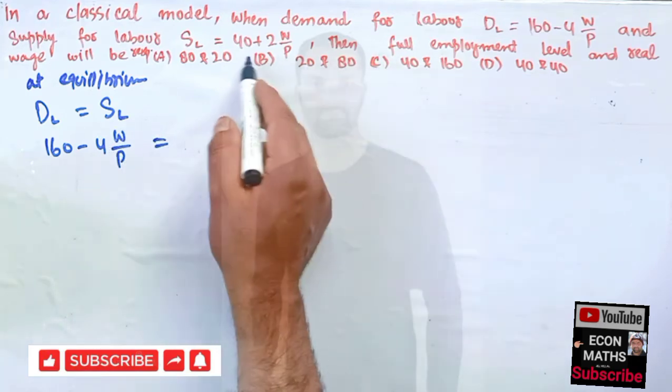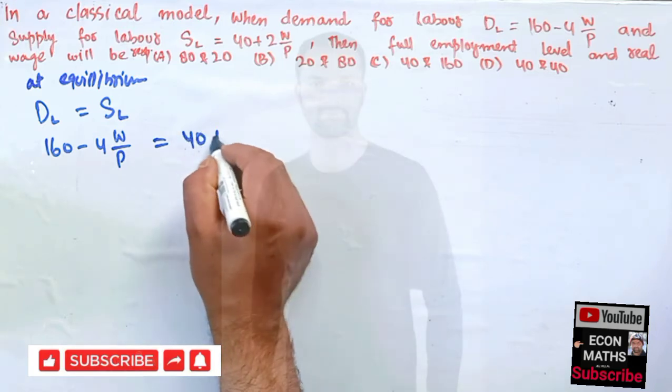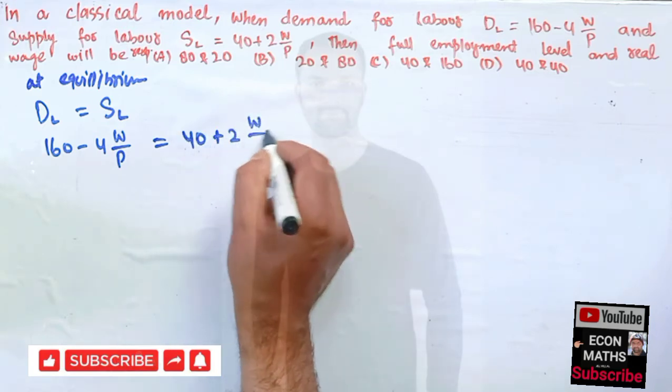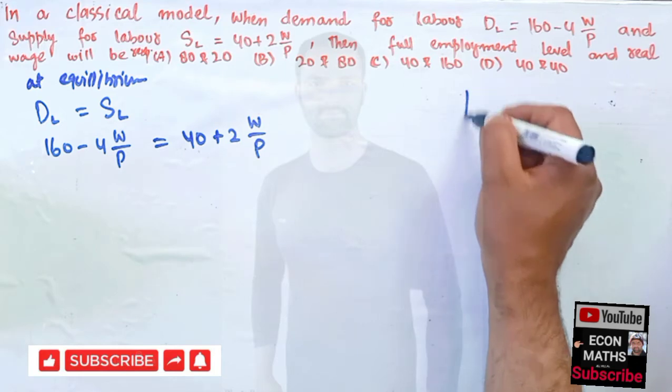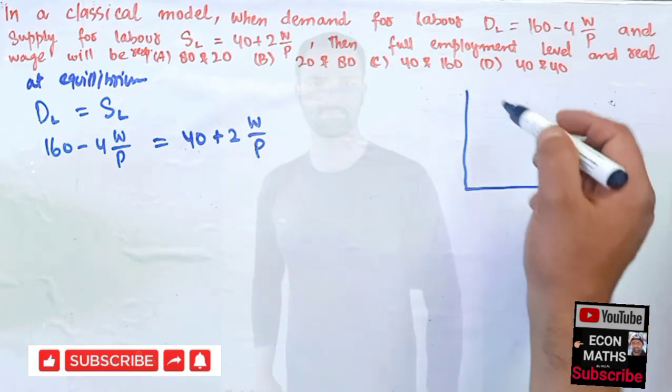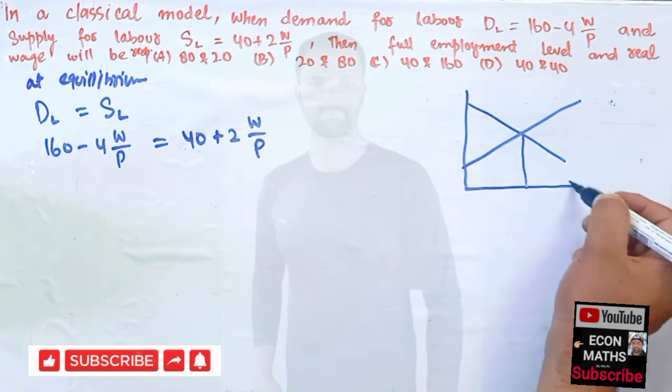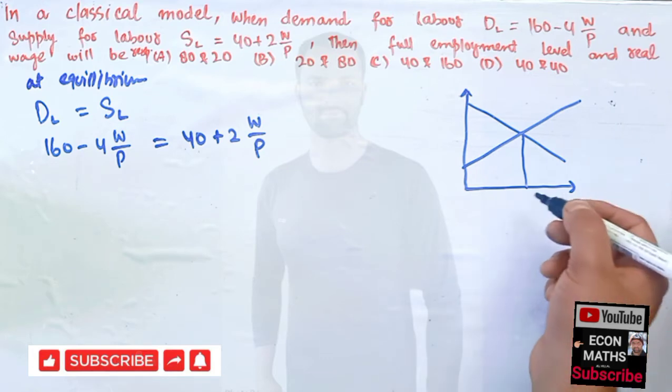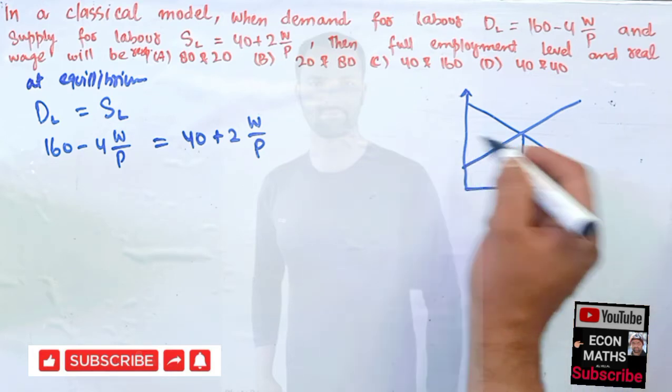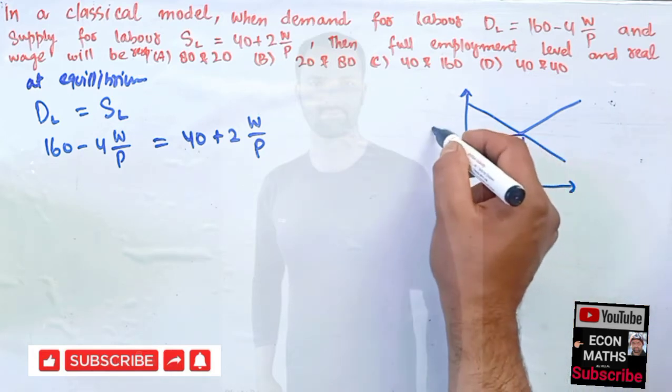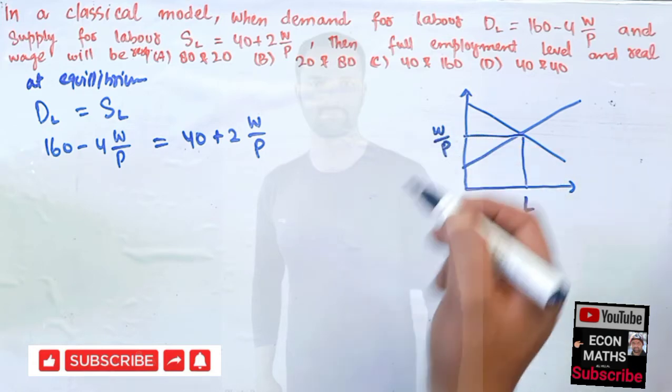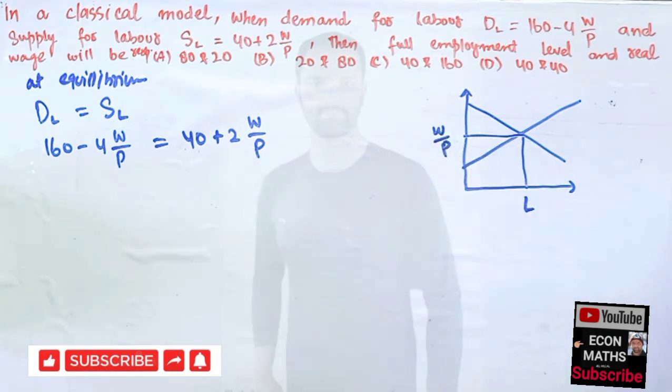Graphically, it simply means we have a downward sloping demand function and upward sloping supply function, where we have to find the employment level at equilibrium, the equilibrium labor and equilibrium real wage rate.